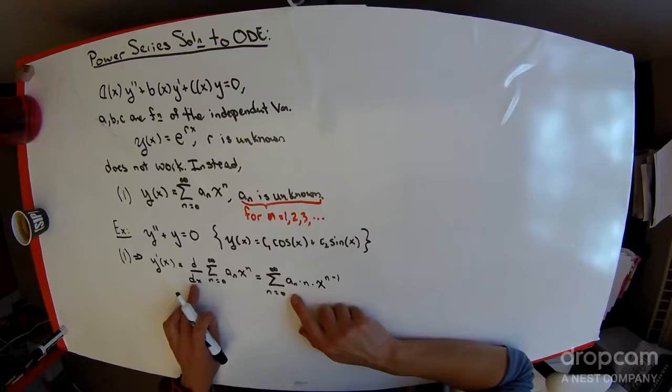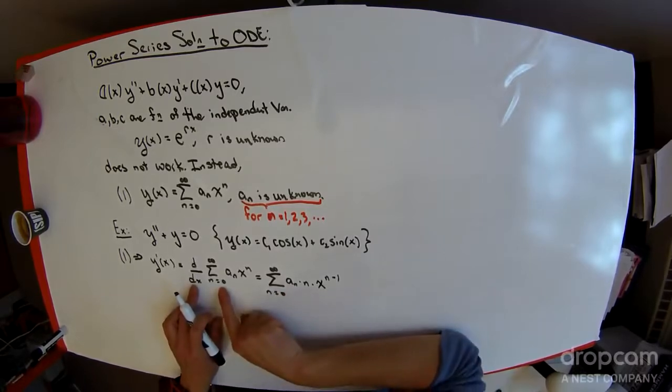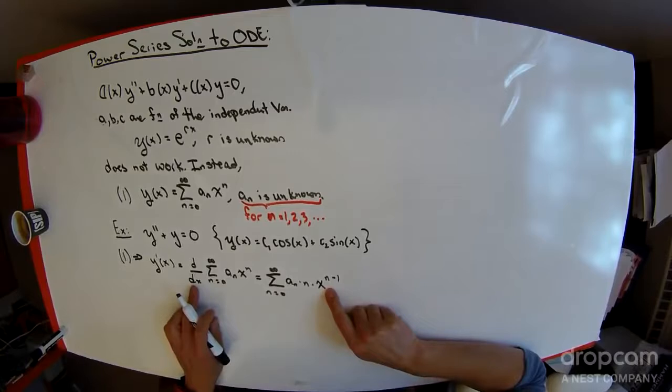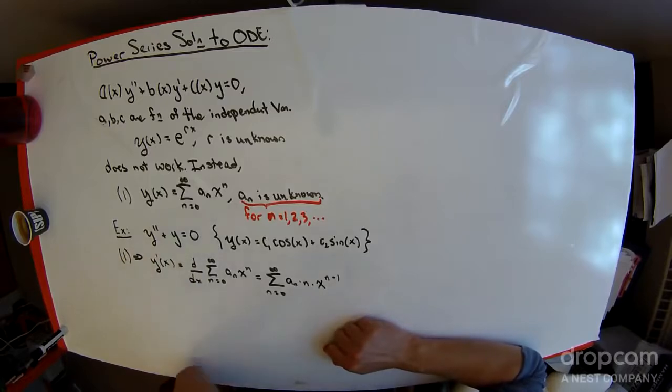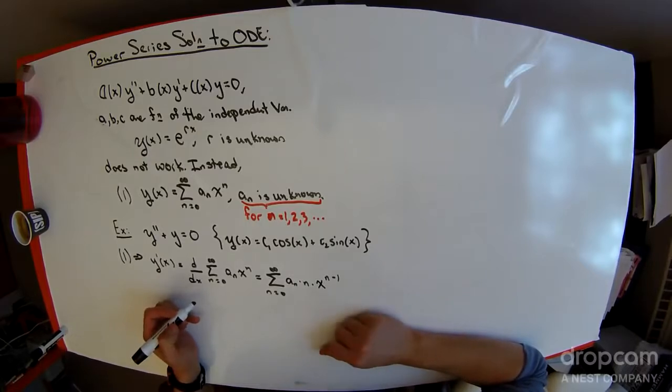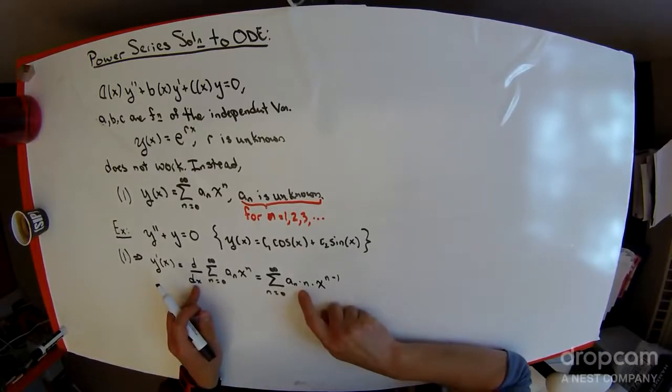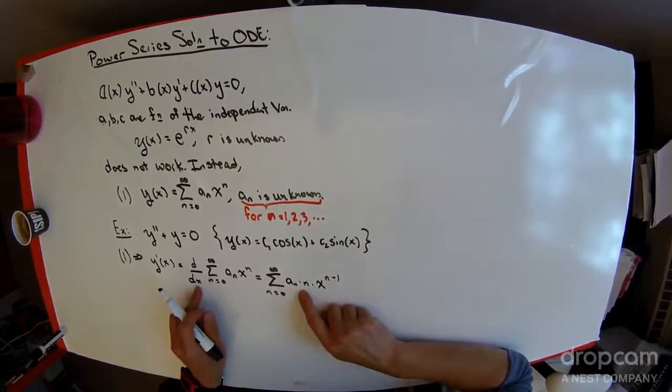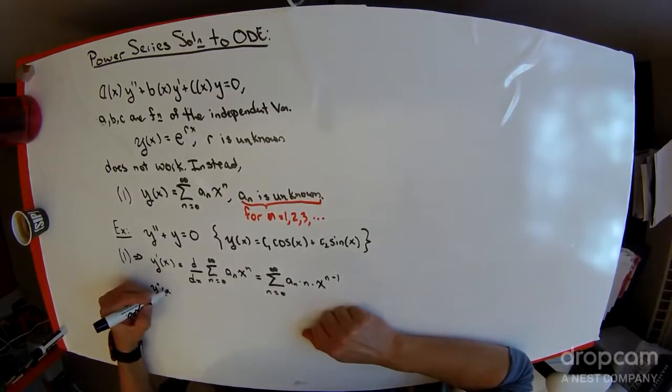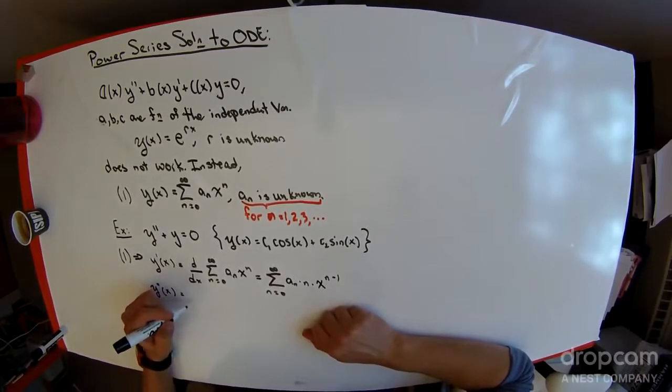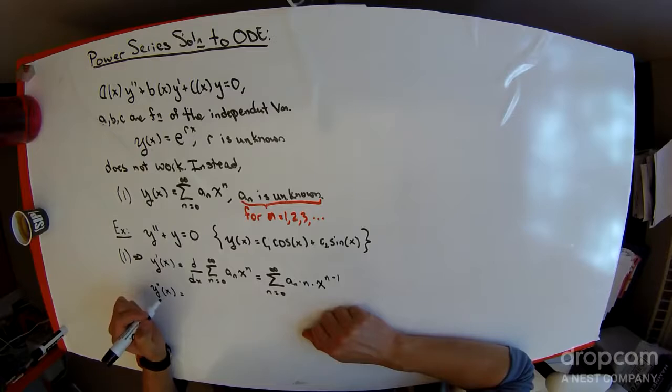Something tricky was done here, and that was that this derivative was passed through the summation and onto the power function. This derivative is intrinsically a limit. This infinite sum is also a limit. There are statements associated with the theory about when you can swap the position of two limits. By taking the derivative to the inside, this limit is now being interposed with this one right here. Convergence properties of this sum have to be studied to be certain that that can be done. But as with most differential equations, we're just going to do it cavalierly. If it wasn't going to work, then we wouldn't have been doing it in the first place.